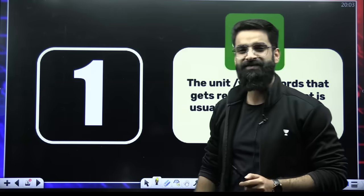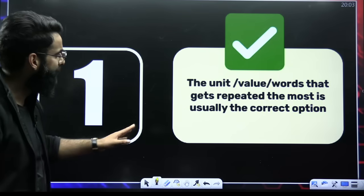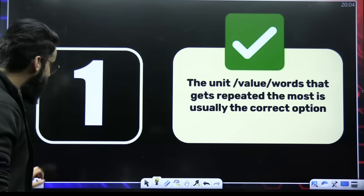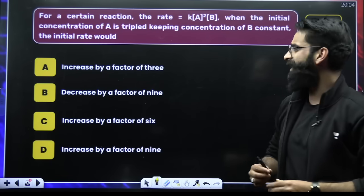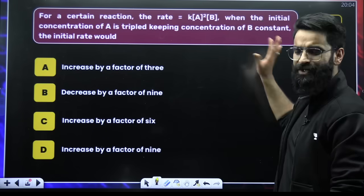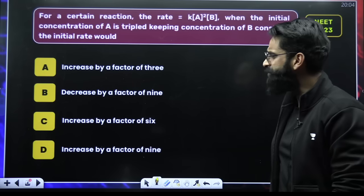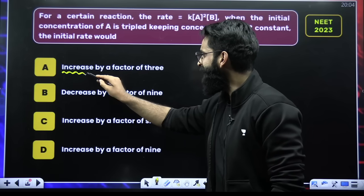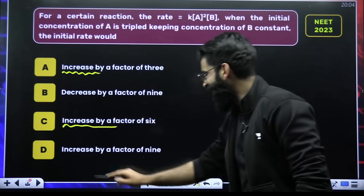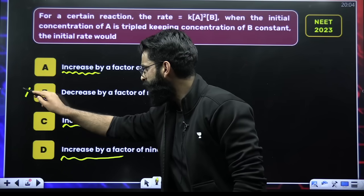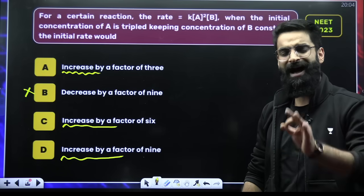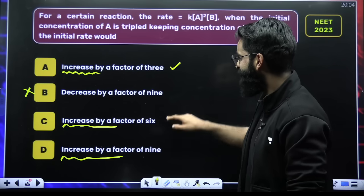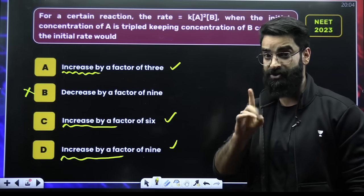There are a few important things which you have to take into consideration. The first and most important point: the unit or value words that get repeated the most is usually the correct option. For example, there is a question asked in the NEET 2023 examination. I'm not reading the question — I'm just looking at the options. See which options are repeated here. I can see 'increases by the factor' appears in three options. So option B cannot be the answer. Your answer lies between A, C, and D.